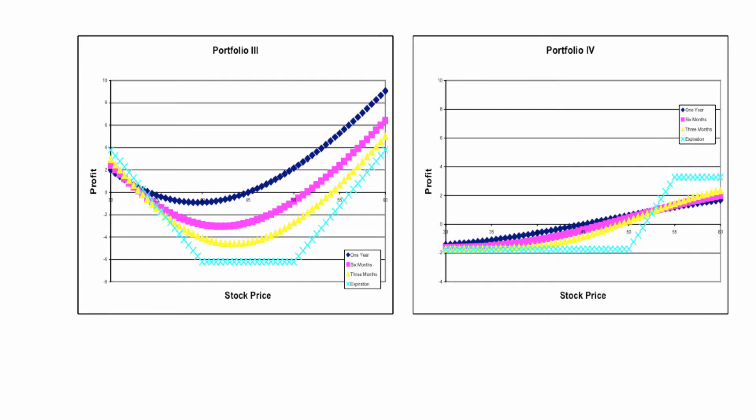Finally, for Portfolio 4, you have a flat line, then an increasing line, then a flat line again. If you've studied option spreads at all, you'll recognize this is a bull spread — but we'll discuss it further.